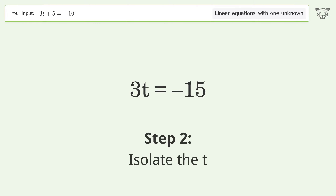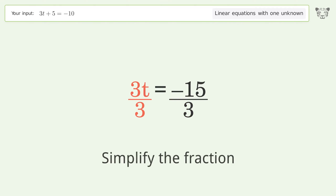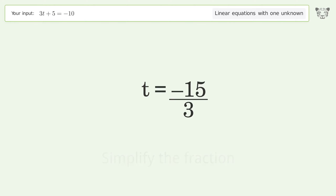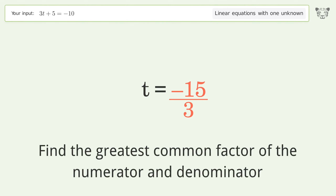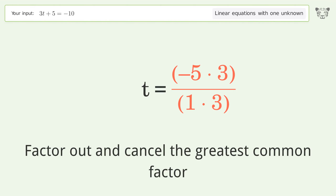Isolate the t: divide both sides by 3 and simplify the fraction. Find the greatest common factor of the numerator and denominator, then factor out and cancel the greatest common factor.